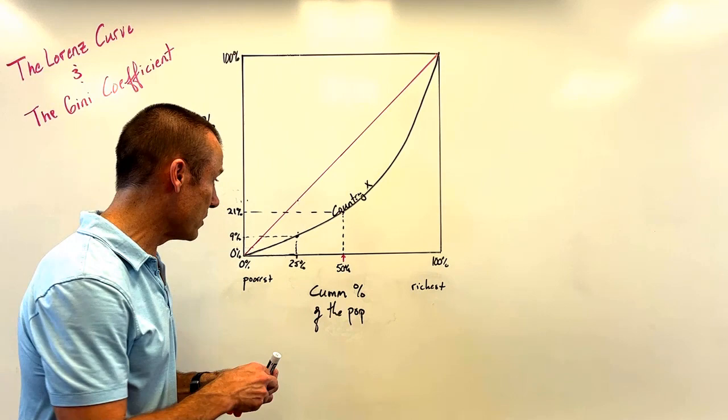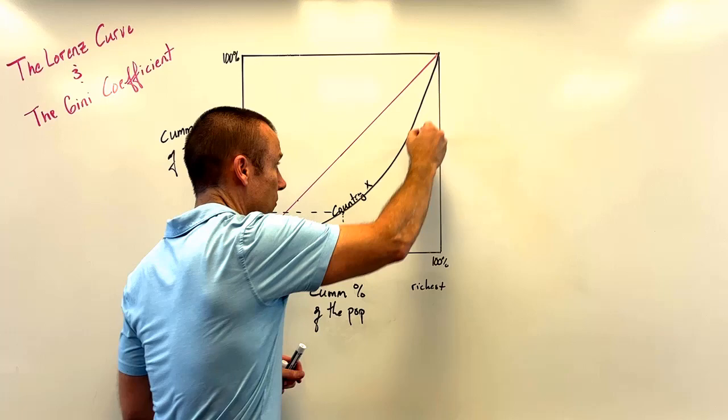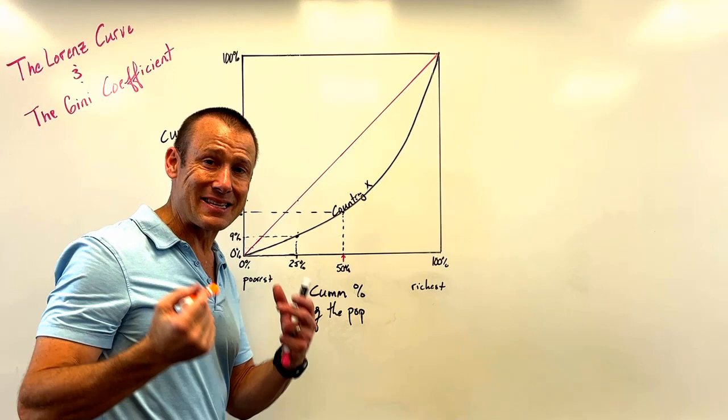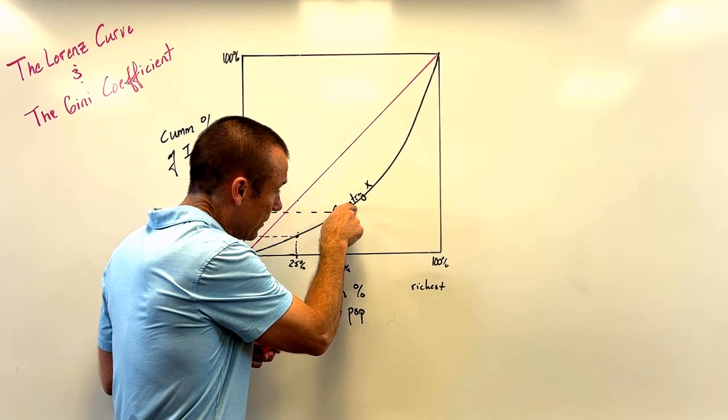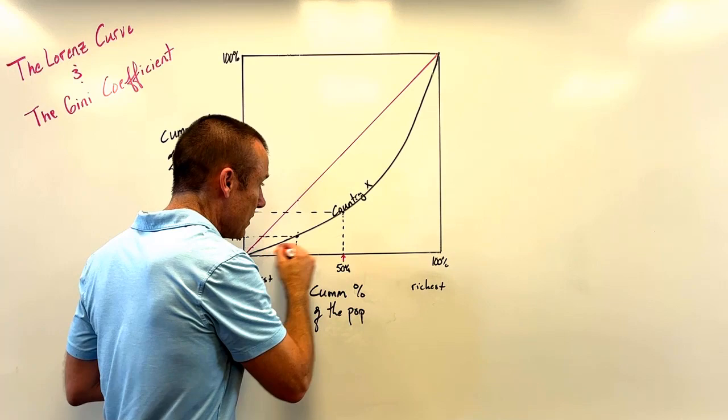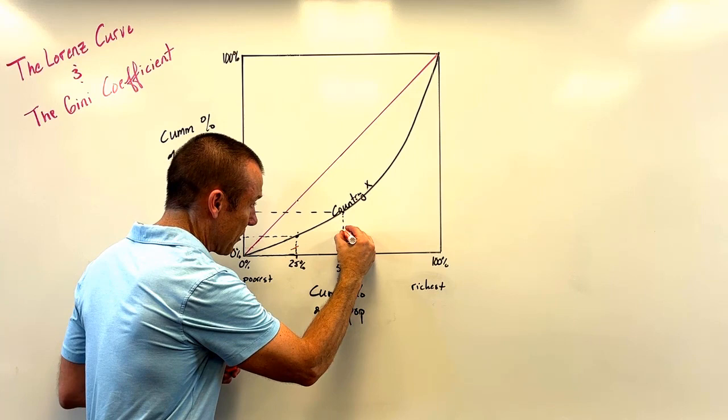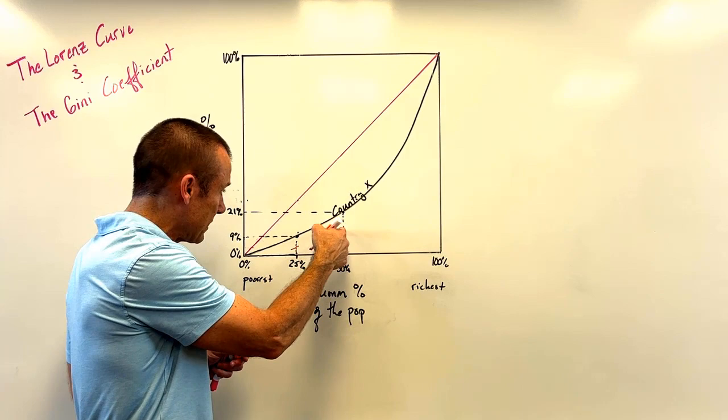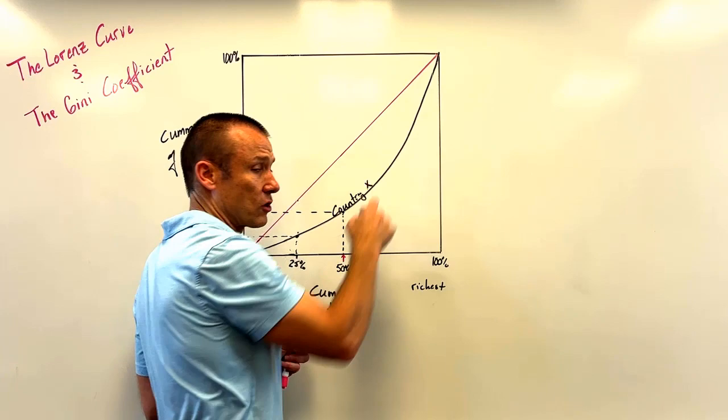You could have another country's curve — say country Y — that bows out further. That means that country has more inequality because it's further from the perfect equality line. Their poorest 25 percent would have had less than 9 percent of income, and their poorest 50 percent would have had less than 21 percent.